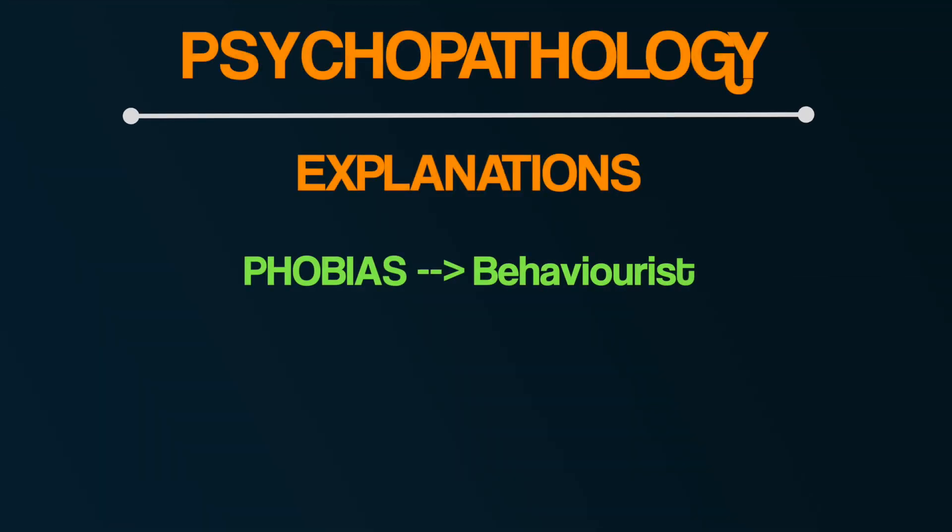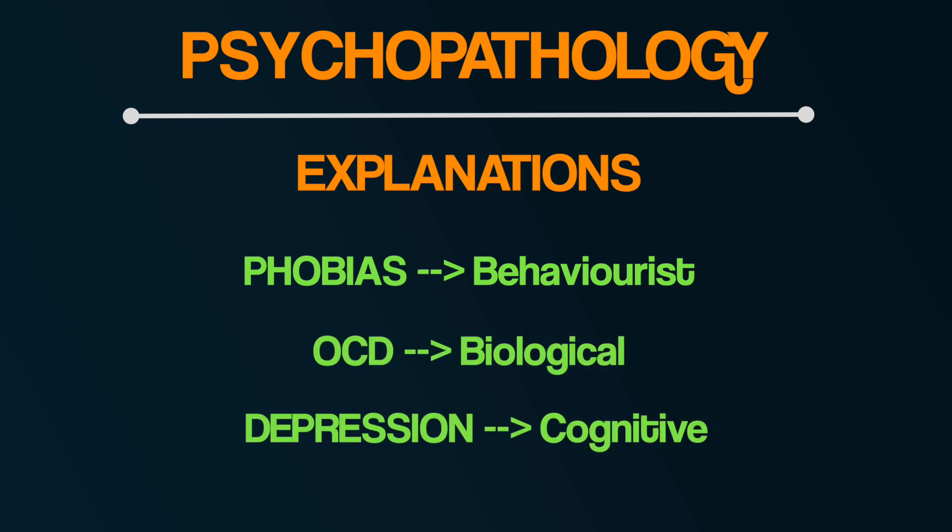For phobias it's a behaviourist explanation, for OCD a biological explanation, and for depression it's a cognitive explanation. That's not to say there aren't other ways to explain these conditions — there are — it's just that for the A-level course the focus is on one type of explanation for each condition. Having said all that, let's explore the two cognitive explanations for depression.